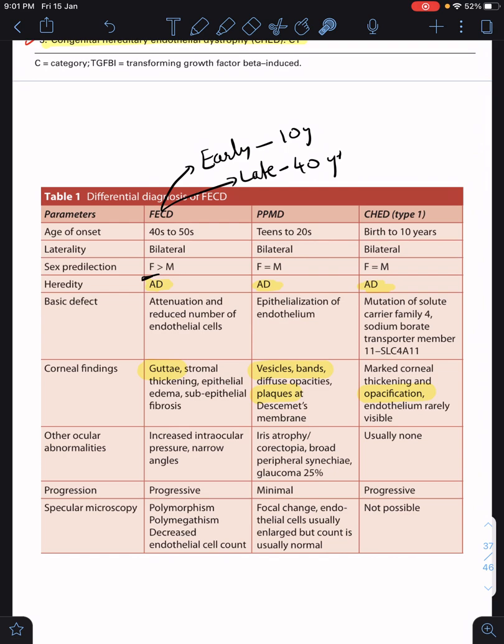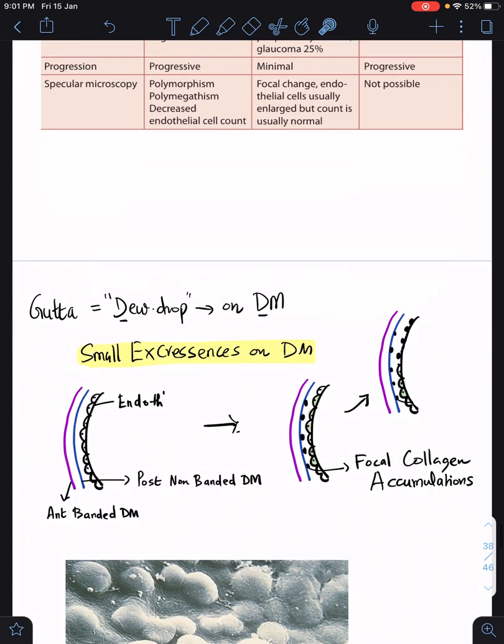Fuchs has a slight female preponderance. Fuchs is characterized by guttae, whereas PPMD is characterized by vesicles, bands, and plaques on the Descemet membrane. CHED is one of the differential diagnoses for congenital corneal opacity, which means the entire cornea is going to be opacified and you cannot visualize the endothelium.